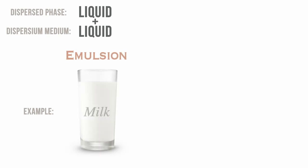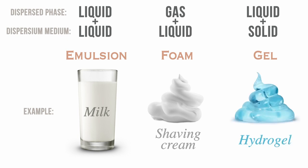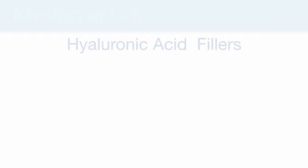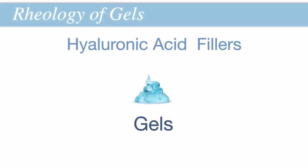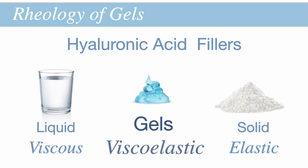For example, colloids formed by two liquids are known as emulsions, with milk being a prime example. Colloids in which a gas is dispersed in a liquid are known as foams, such as shaving cream. However, if a liquid is dispersed into a solid, the resulting mixture is known as a gel, and if that liquid is water, the colloid is known as a hydrogel. Hyaluronic acid fillers are all hydrogels. Being gels, they exist as a mixture of a liquid phase within a solid phase, and as a result they demonstrate both the properties of viscosity and elasticity — they are known as viscoelastic materials.